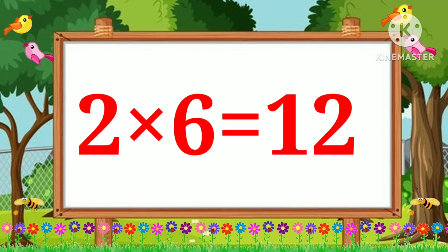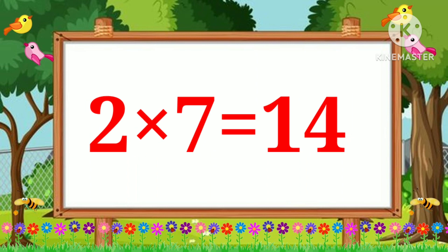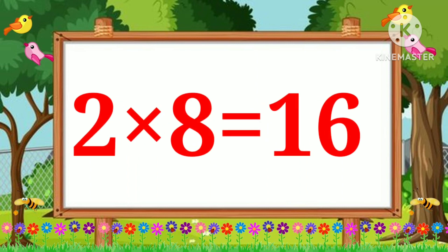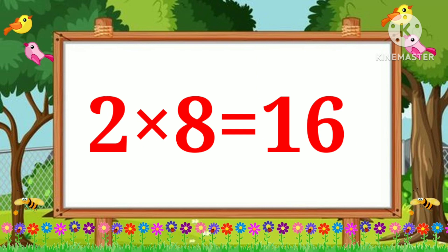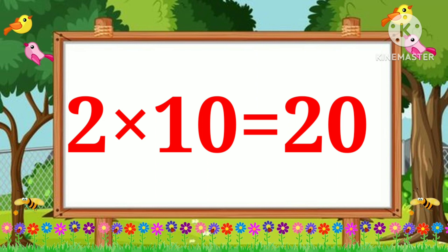Two six's are twelve. Two seven's are fourteen. Two eight's are sixteen. Two nine's are eighteen. Two ten's are twenty.